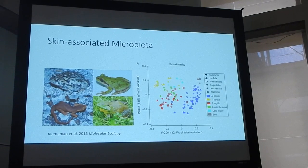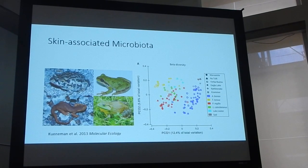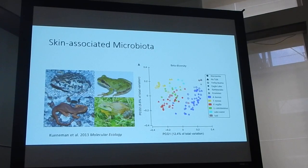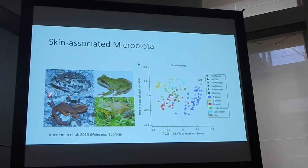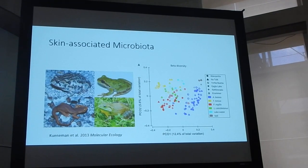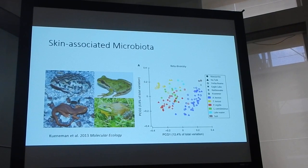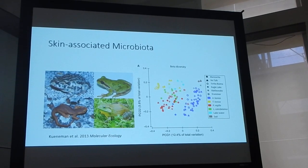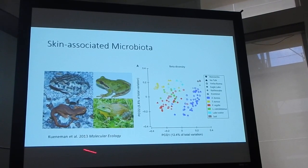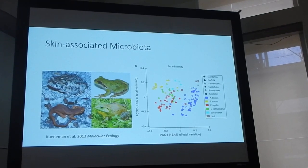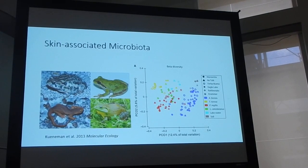Kinneman et al. did a study on four different salamander species across California at multiple sites, and they were able to see that there was high species-specificity in the microbiota. Here we see a principal coordinate analysis plot where each point corresponds to the microbiome community from an individual, and the different colors are the different species designations for that host. You can see that the microbiota is clustering based on species identity, even though samples were collected from different sites.